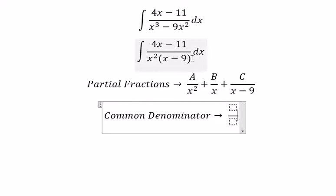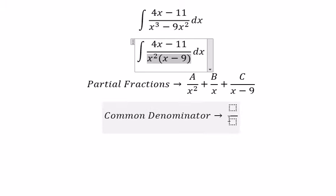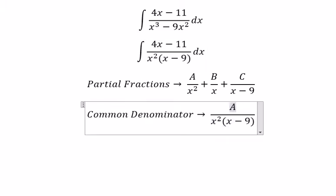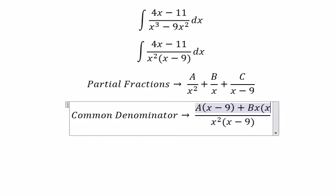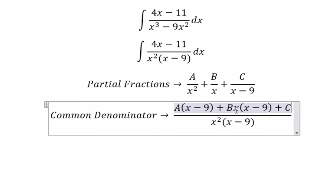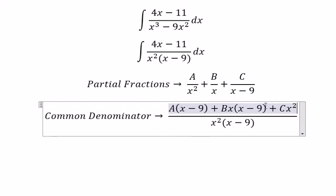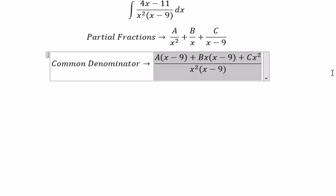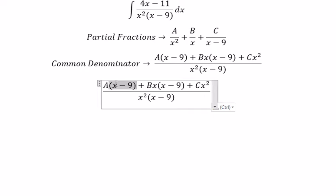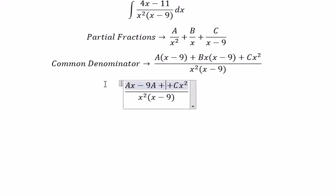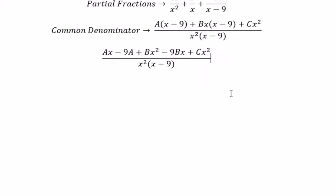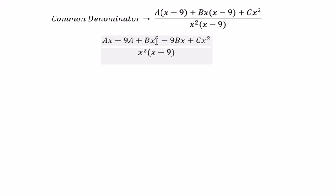We have the same denominator here, so A is multiplied with X minus 9, B is multiplied with X times X minus 9, and C is multiplied with X squared. Now we need to expand everything.